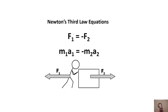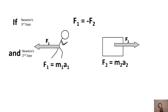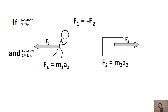Since force is the same for both objects, we can derive a combined equation mixing Newton's second and third laws. Newton's third law says F1 = −F2. Newton's second law tells us the net force on object 1 equals M1 × A1, and the net force on object 2 equals M2 × A2.